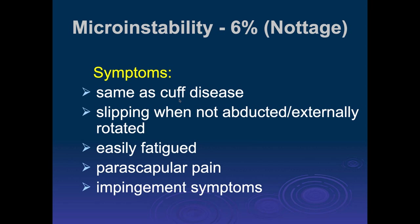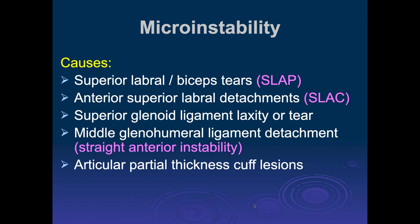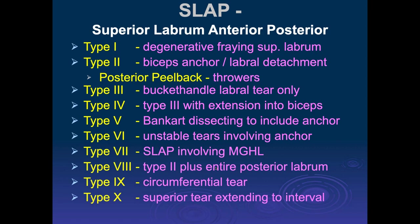Symptoms of superior instability are similar to cuff tear disease: instability signs, fatigability, periscapular pain, and symptoms of impingement. Causes include superior labral tears or biceps anchor tears, anterior superior labral detachments called SLAC lesions, superior glenohumeral ligament laxity or tear, middle glenohumeral ligament detachment, and articular partial thickness cuff lesions. SLAP stands for Superior Labral Anterior to Posterior — a term coined by Steve Snyder from SCOI.